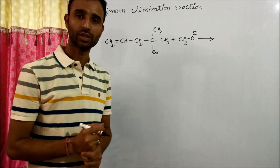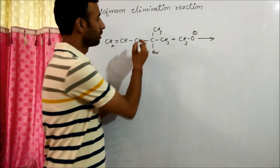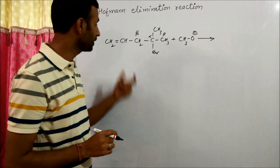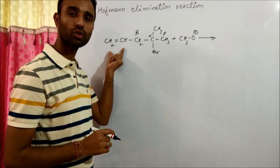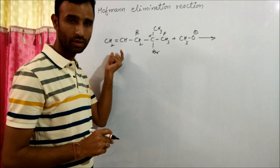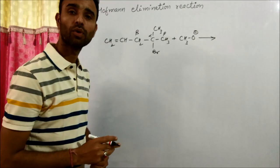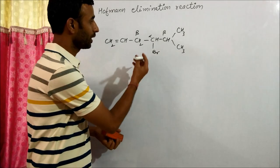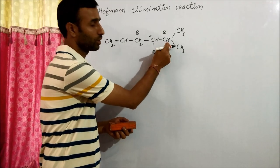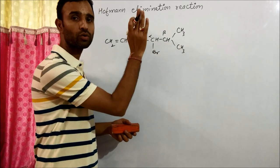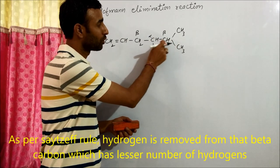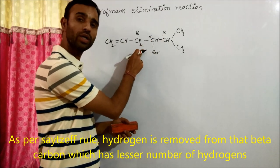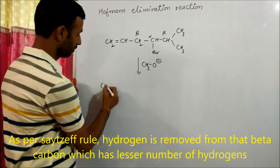The last case is when the beta carbon contains at least one or more than one double bond — again the product formed is as per Hofmann's rule. Looking at the structure, it has one hydrogen on one side and two hydrogens on the other. According to the Zaitsev rule the double bond should form on one side, but as per Hofmann's rule the double bond should form on the other side.